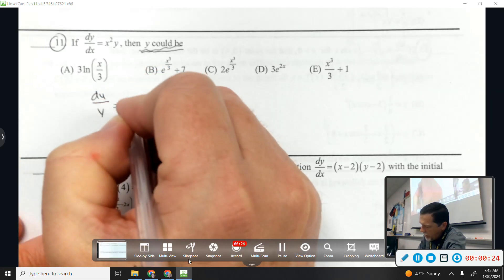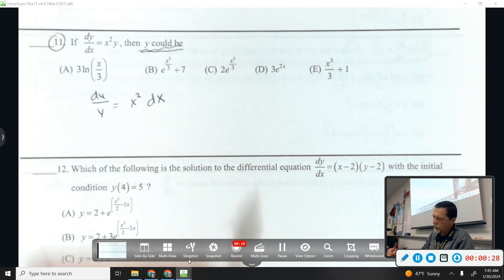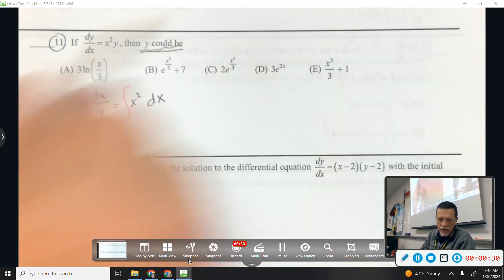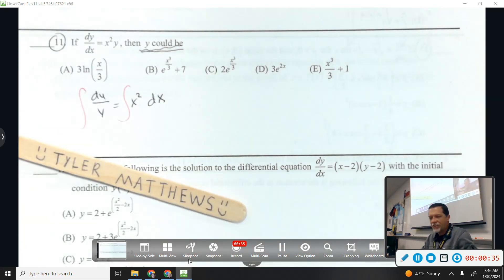dy over y equals x squared dx, where's our separate, and we'll integrate. Perfect, Tyler already know you know how to answer that one.